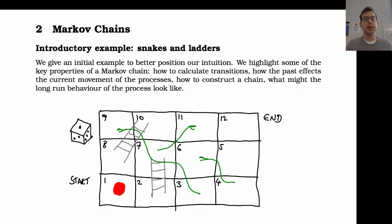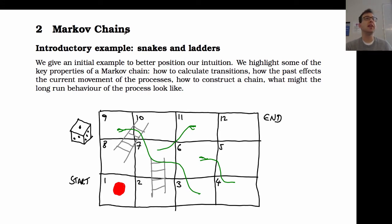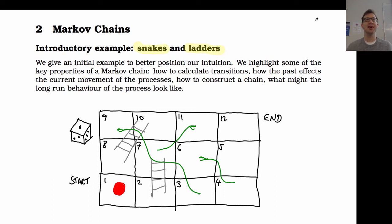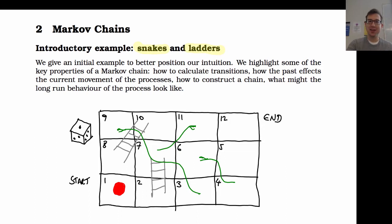So let's get going. We're going to consider Markov chains and I'm going to start with a very easy example. Our introductory example is going to be snakes and ladders. It's a very classic board game - I'm not sure where snakes and ladders exists around the world, but it's a very simple game.